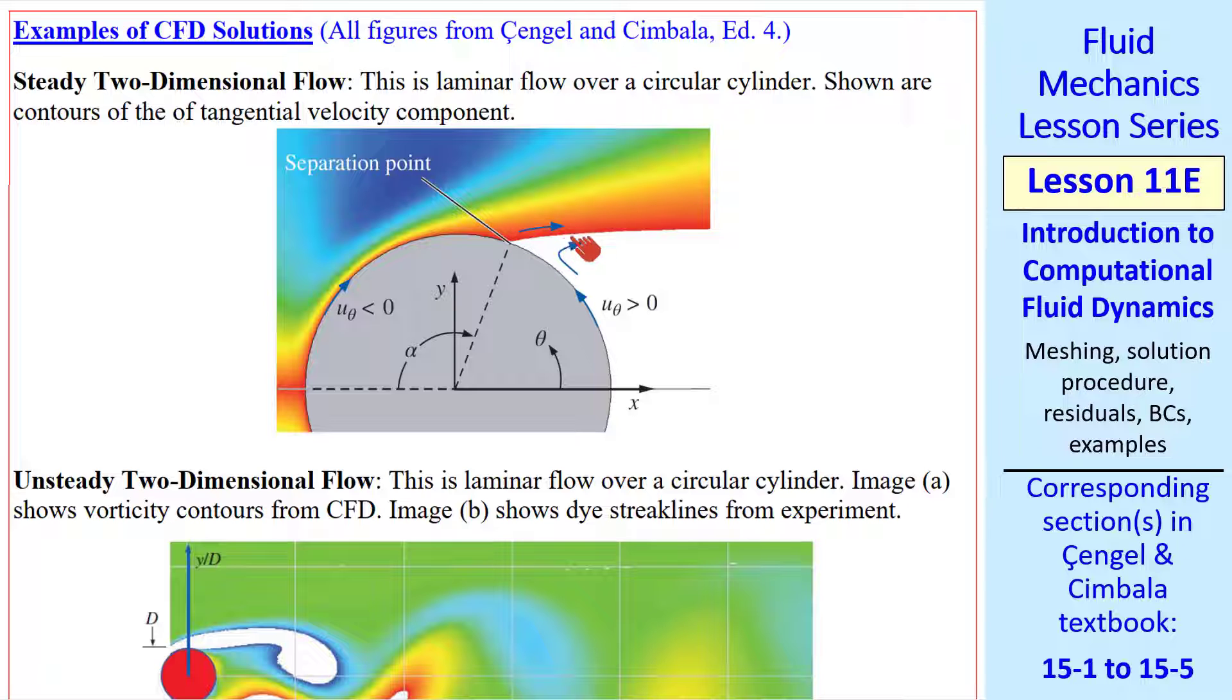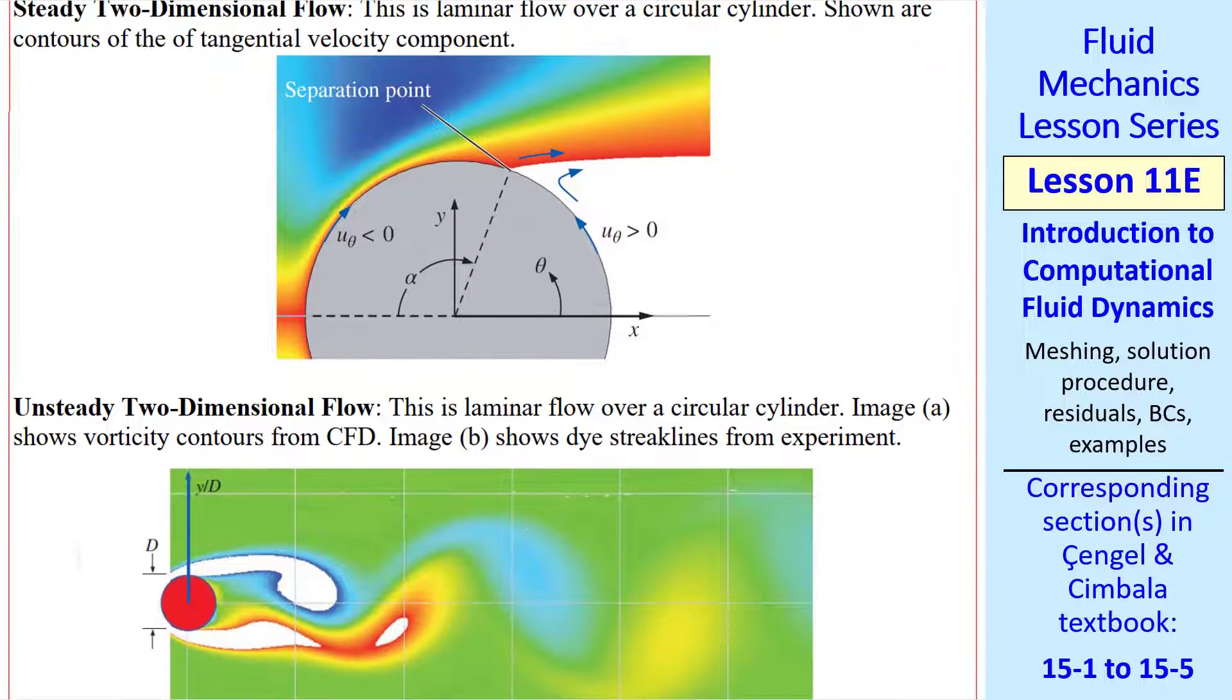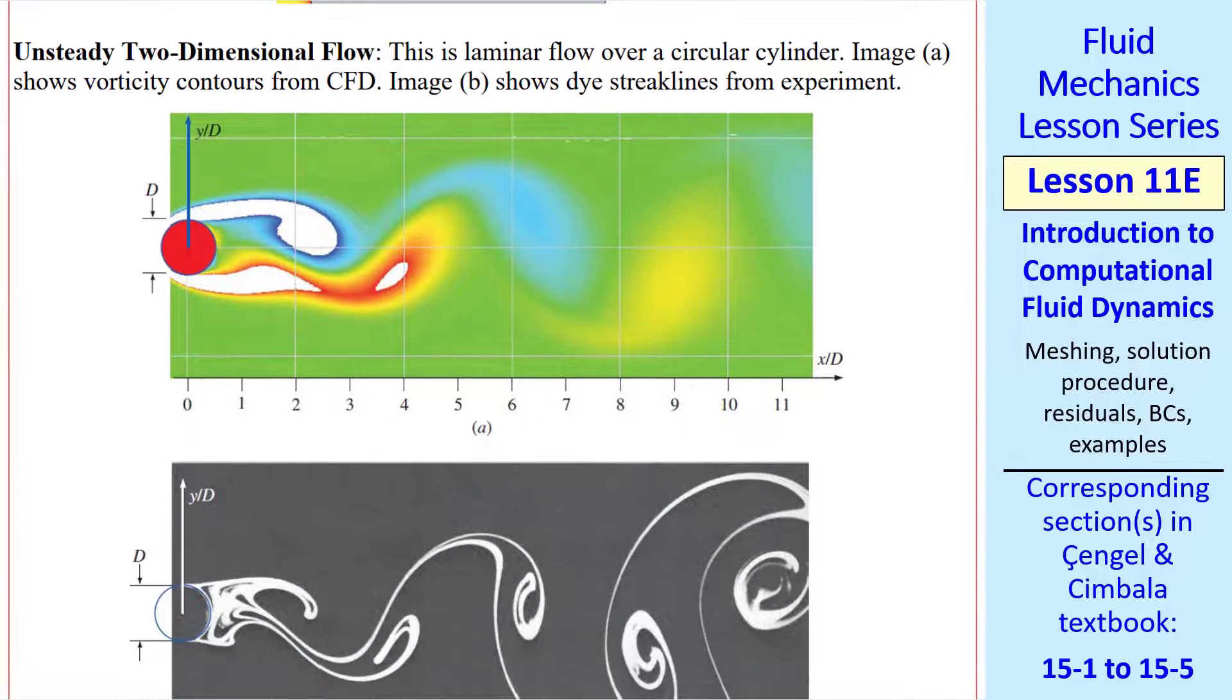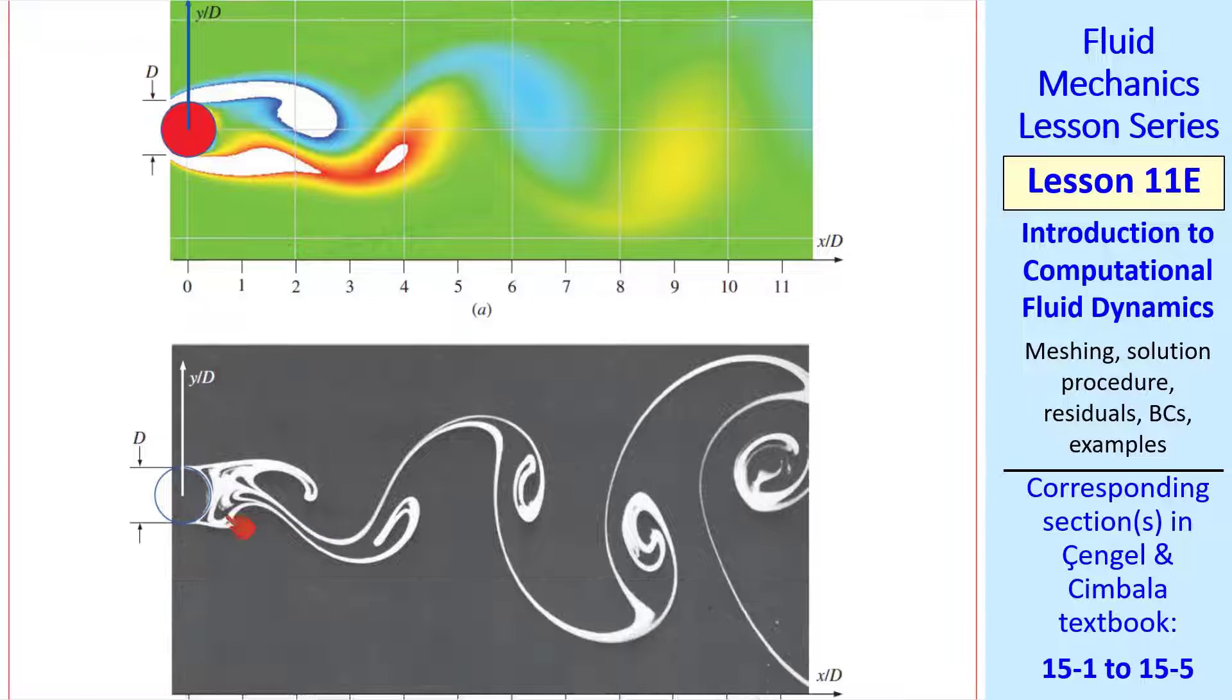If we do this same problem with unsteady flow, we find that the actual flow is not steady, but rather oscillates with what's called a Karman vortex street. Here's an experiment using dye streak lines that shows a very similar flow field. Here we're plotting vorticity contours. Vorticity is positive in this vortex and negative in this vortex. The white regions are outside the contour map. In other words, here too high and here too low to be assigned a color. This flow is near to my heart since I did my PhD thesis on circular cylinder wakes.